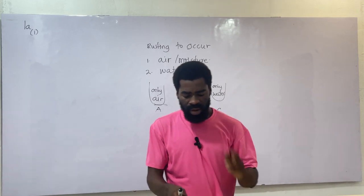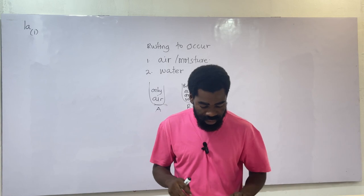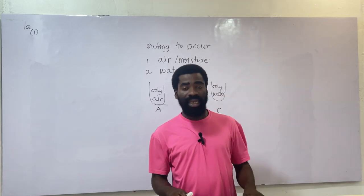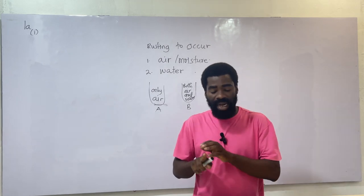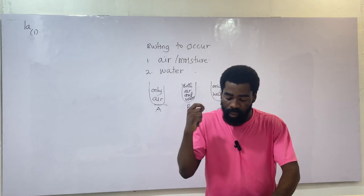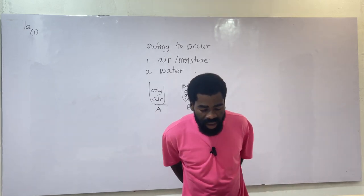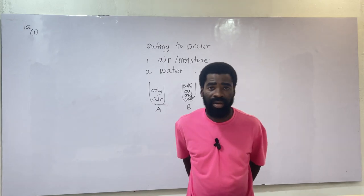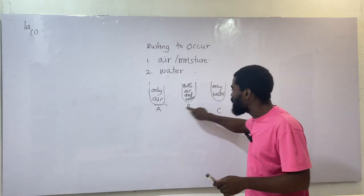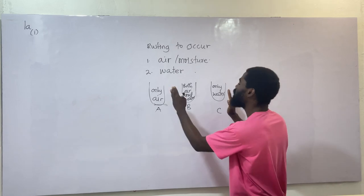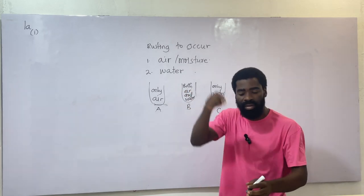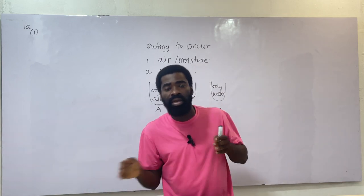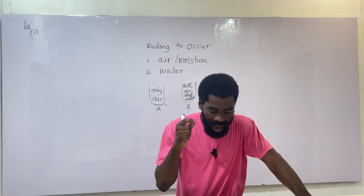Let's go straight into answering question one. In test tube A we can see that we have air, water and a rusted nail. That should tell you that all the conditions are present in test tube A. Be careful because the diagram may be twisted — they might have changed it, placing test tube A at the position of test tube C. So check it carefully. In A we have air, water and rusted nail.